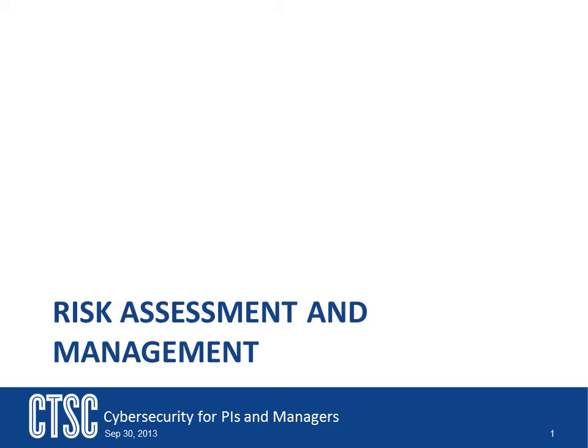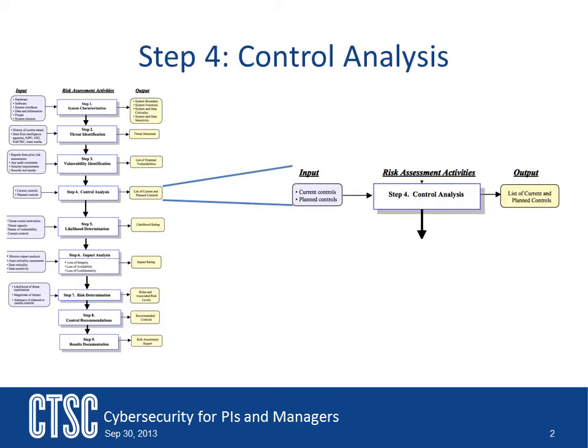In this video, we will continue our discussion about the steps of risk assessment. We will now focus on Step 4 of the NIST 9-step procedure for performing a risk assessment. Specifically, this step focuses on control analysis, or looking at controls that are in place or planned to be put in place for the system.